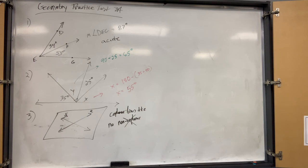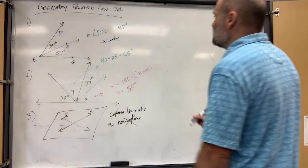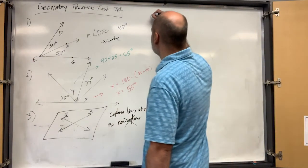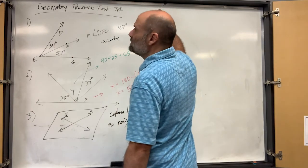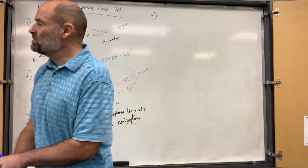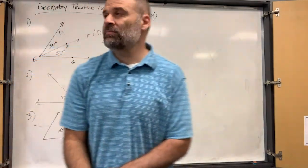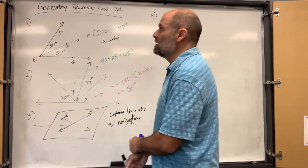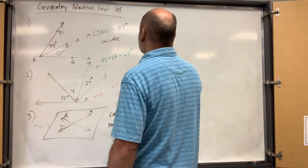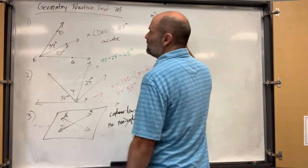Number four: find a counter-example to this conjecture — if a quadrilateral has two pairs of congruent sides, it is a parallelogram.